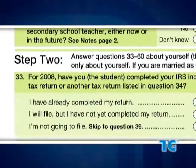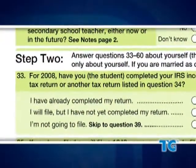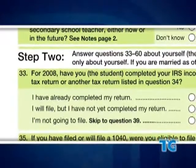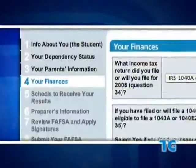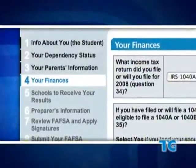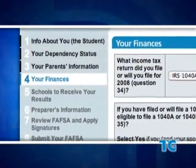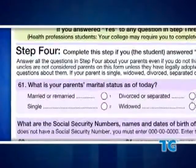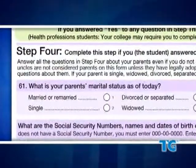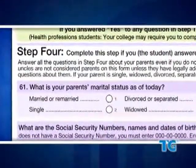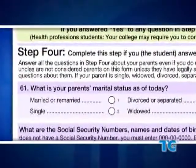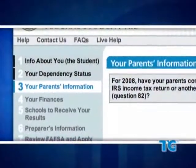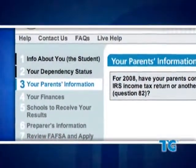You'll find the student's financial section of the FAFSA in step two in the paper form. For the online FAFSA, they're in step four. Financial questions for parents are in step four of the paper form and in step three online.